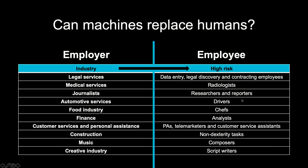Journalists — researchers and reporters — are at high risk because of automation and the algorithms we currently have. In some areas, algorithms can already write articles, effectively replacing journalists. In automotive services, drivers are obviously at risk; I've already given the example of driverless cars, where we have a human operator rather than a driver. In the food industry, there is a lot of automation in kitchen and cuisine, and while it's hard to say to what extent chefs face immediate danger, there is definitely significant automation in this industry.